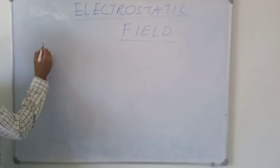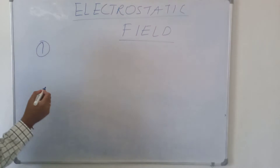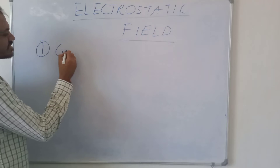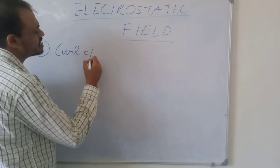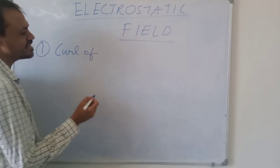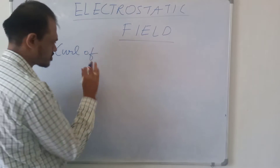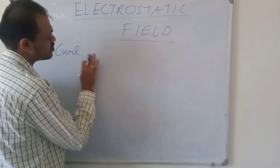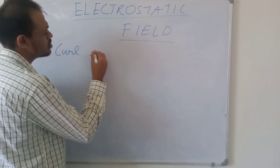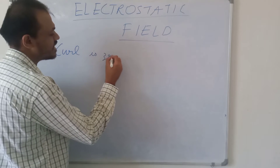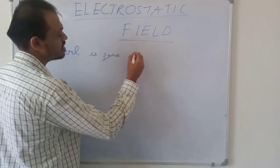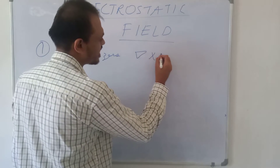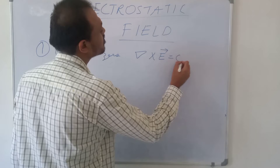First of all, the curl of the electrostatic field is zero. The curl is zero, so it means that if we denote the curl by ∇ cross E vector, then it is equal to zero.